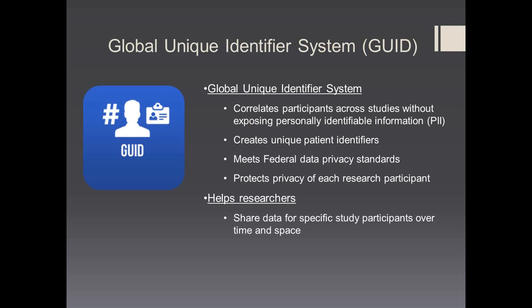The Global Unique Identifier System correlates participants across studies without exposing personally identifiable information, or PII. It creates unique patient identifiers, meets federal data privacy standards, and protects the privacy of each research participant. The GUID helps researchers share data for specific study participants over time and space.